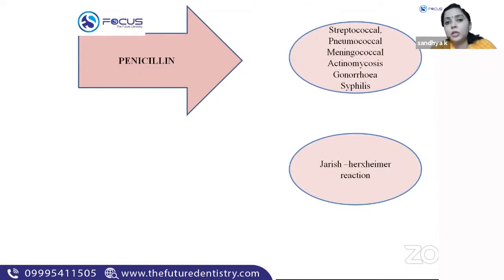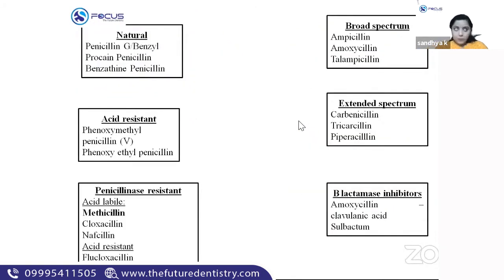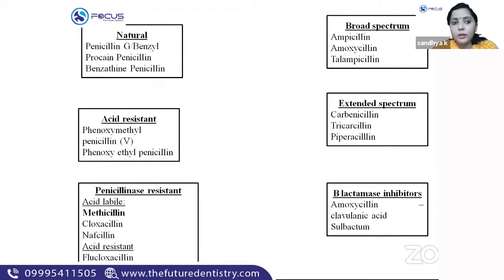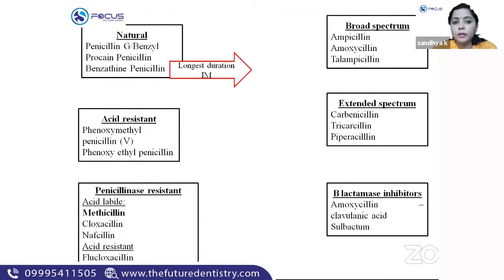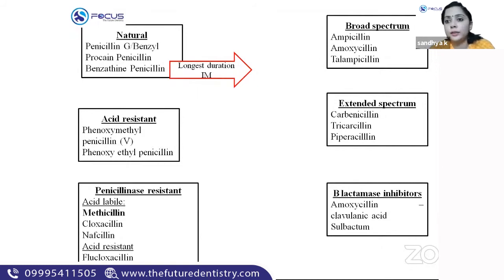Classification of penicillins: natural, acid-resistant, penicillinase-resistant, broad spectrum, extended spectrum, and beta-lactamase inhibitors. Natural penicillins include penicillin G, procaine penicillin, and benzathine penicillin. Benzathine penicillin has the longest duration of action — given IM, it is sufficient once every two to four weeks.